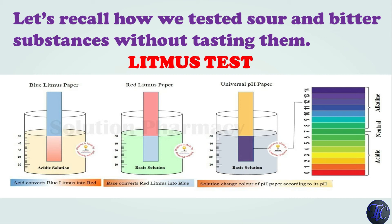There is another paper — universal pH paper. With the help of universal pH paper, we can come to know whether the solution is basic or acidic. The solution changes the color of the pH paper according to its pH. Every solution has a pH, and the solution turns the paper color according to its pH. As shown in the figure here, the solution has turned the paper into blue, meaning it is alkaline — it has a pH more than 7. So we come to know the solution is basic. This is how, with the help of a litmus test, we can determine whether a given solution is acidic or basic.